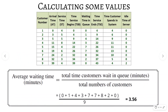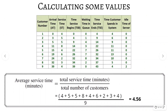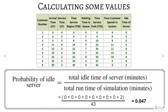Now we'll solve some calculations. Average waiting time is calculated as total waiting time divided by total number of customers. Add all waiting queue values and divide by nine. Next, probability of waiting: number of customers who waited divided by nine. Except for the first and ninth customers, all other customers waited, so seven out of nine waited, giving 0.78. Average service time is the sum of all service times divided by nine. Probability of idle server is total idle time of server divided by total runtime of simulation.